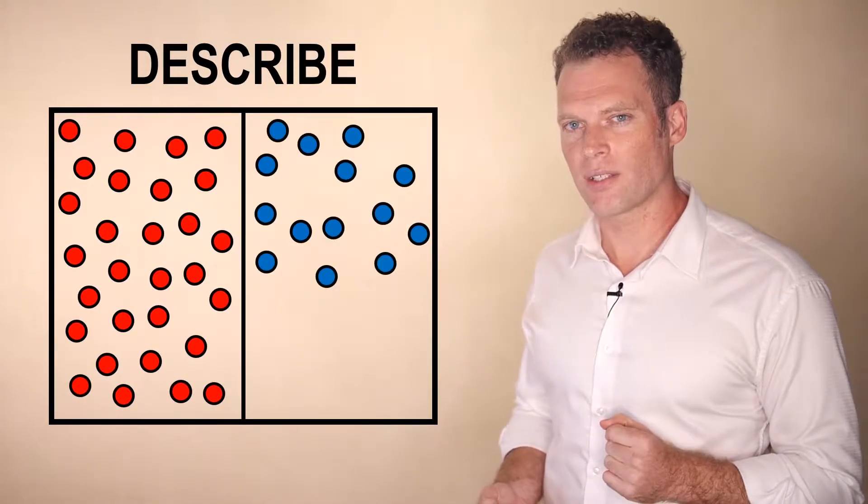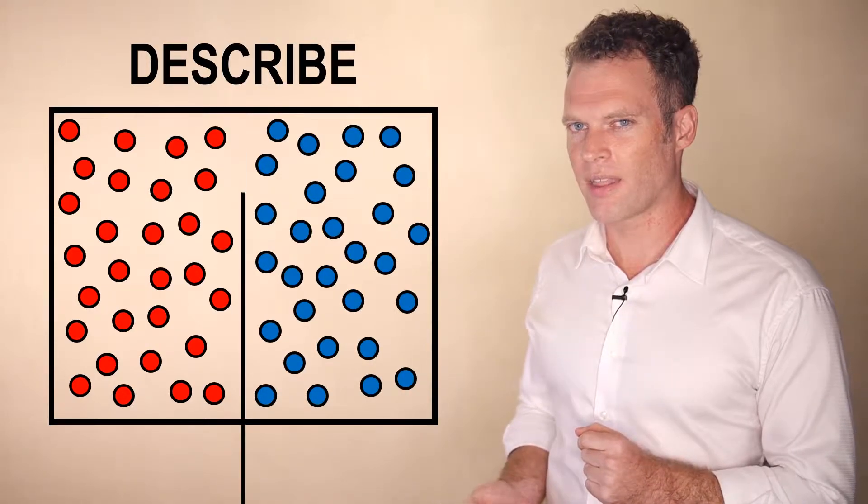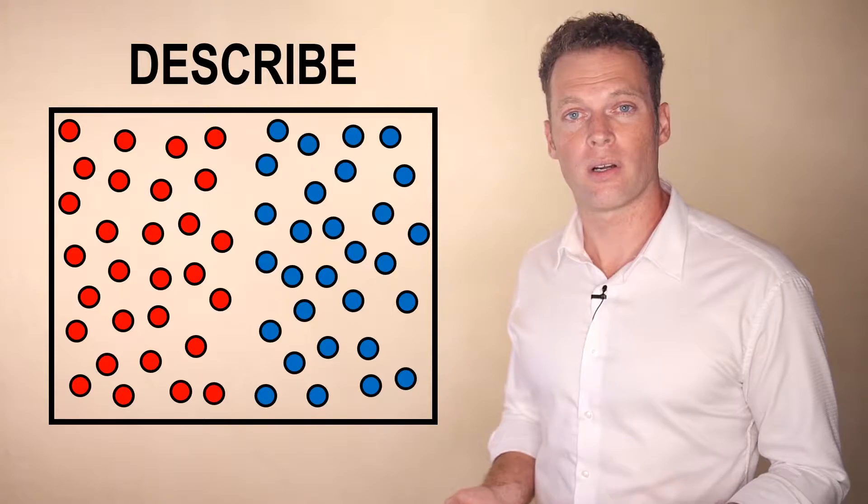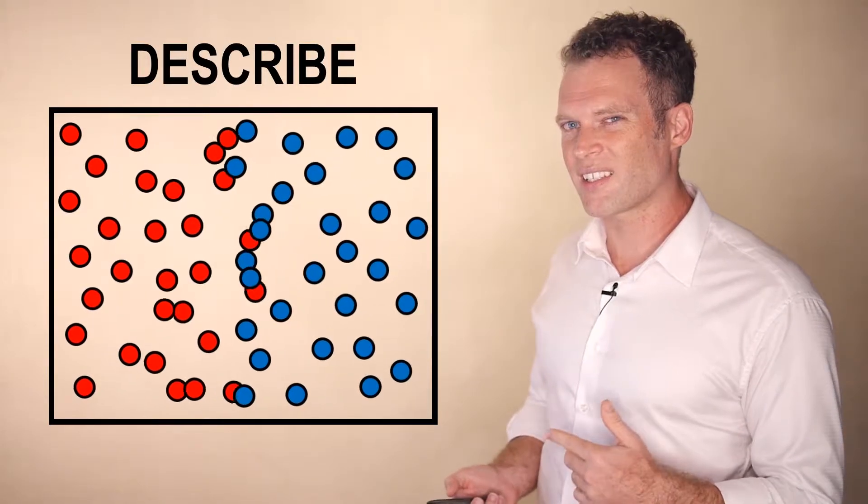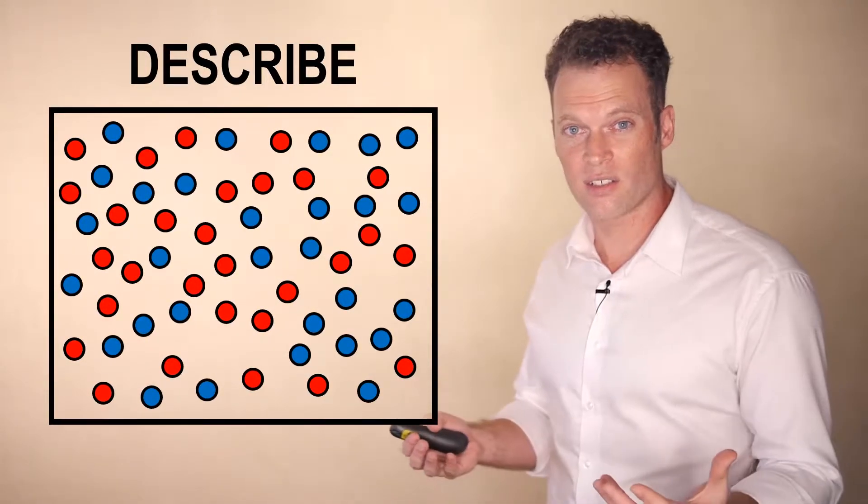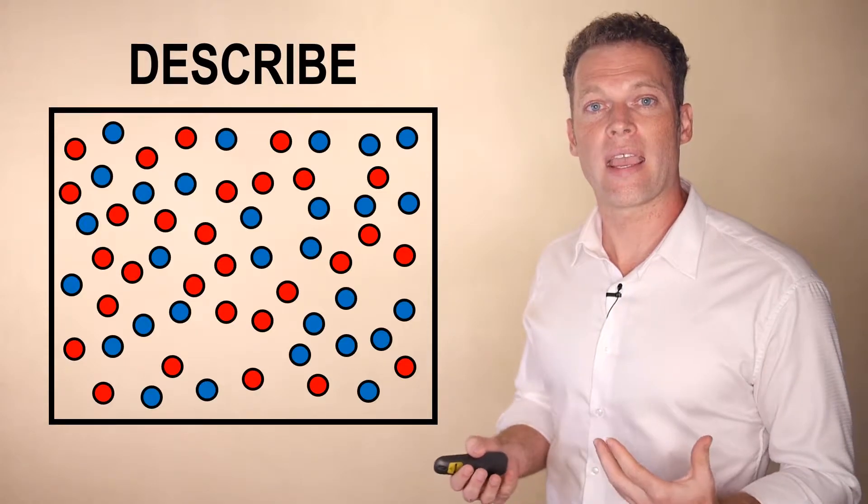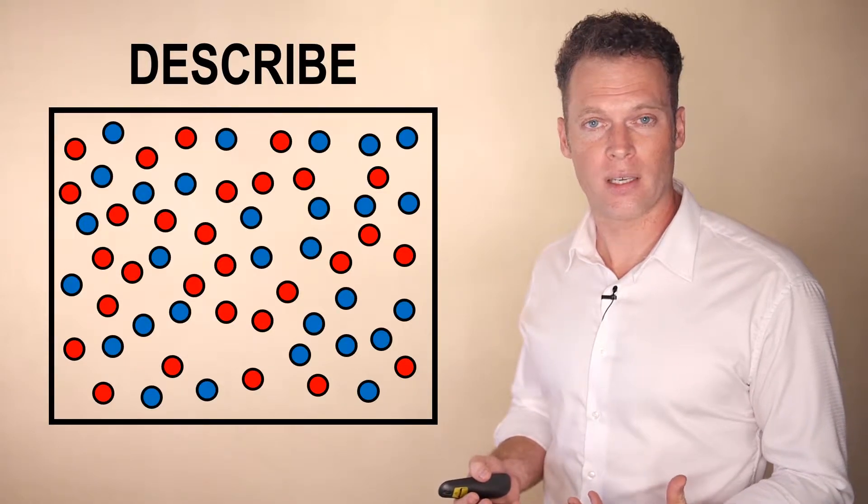Now, what happens if we change the scenario, and instead of vacuum on the right, it's another gas. And then we remove the barrier as before. Well, you're probably guessing it does something kind of like this. The two gases don't just stay on their respective sides. They mix. How do they mix? What is the nature of that mixing?